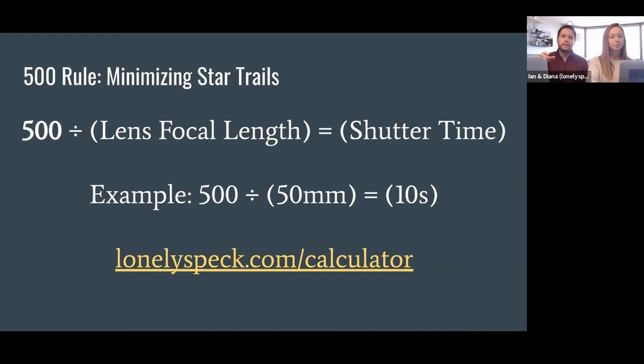If you're shooting on, say, a not wide angle lens, maybe you're shooting on a 50 millimeter, just because of the fact that you're going to be slightly more zoomed in, the apparent motion of the stars is going to be greater. So we'll end up having more star trailing. So if you want to try to minimize that a little bit, you can use the 500 rule in order to determine a more suitable shutter time.